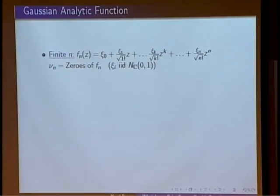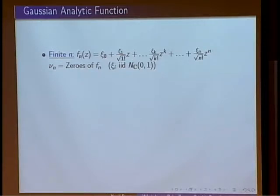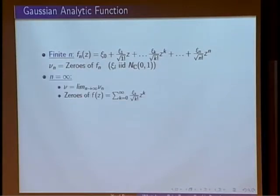The other process we'll focus on is the zeros of a Gaussian analytic function, which is the limit of these polynomials. We start with polynomials by taking independent complex Gaussians ξ_k, dividing the k-th one by √(k!), and looking at this polynomial. We look at the zeros of this random polynomial as a point process with just n points. Taking the limit as n tends to infinity, it's clear that the limit just consists of the zeros of this random analytic function.